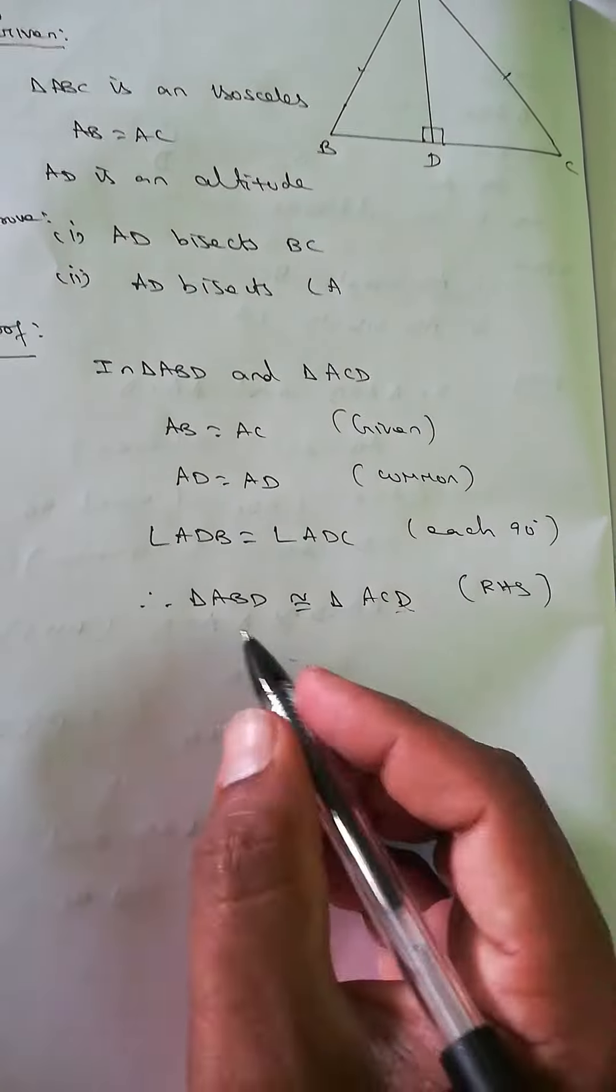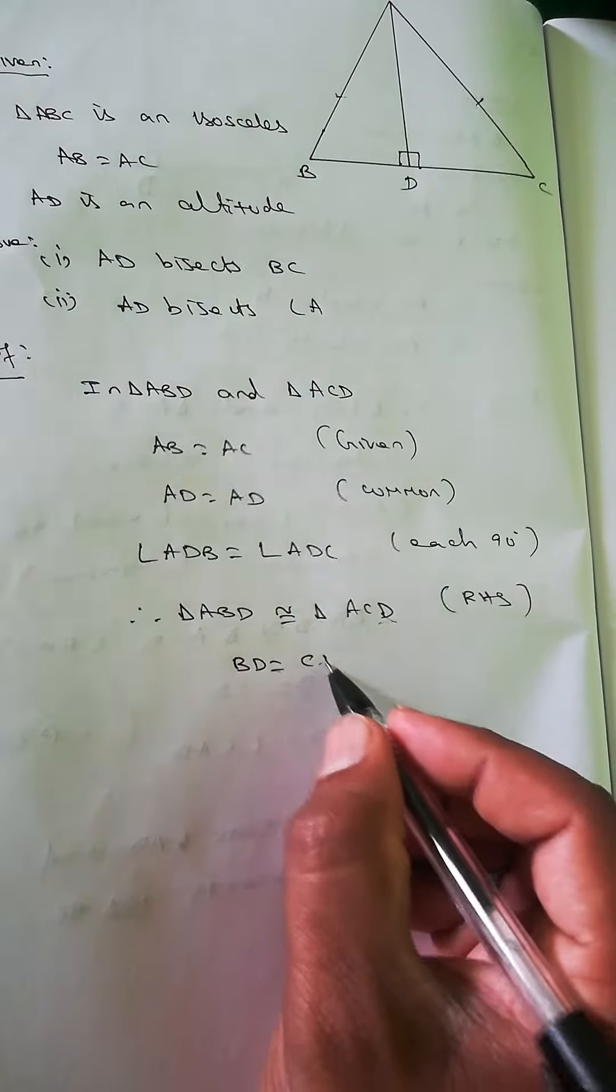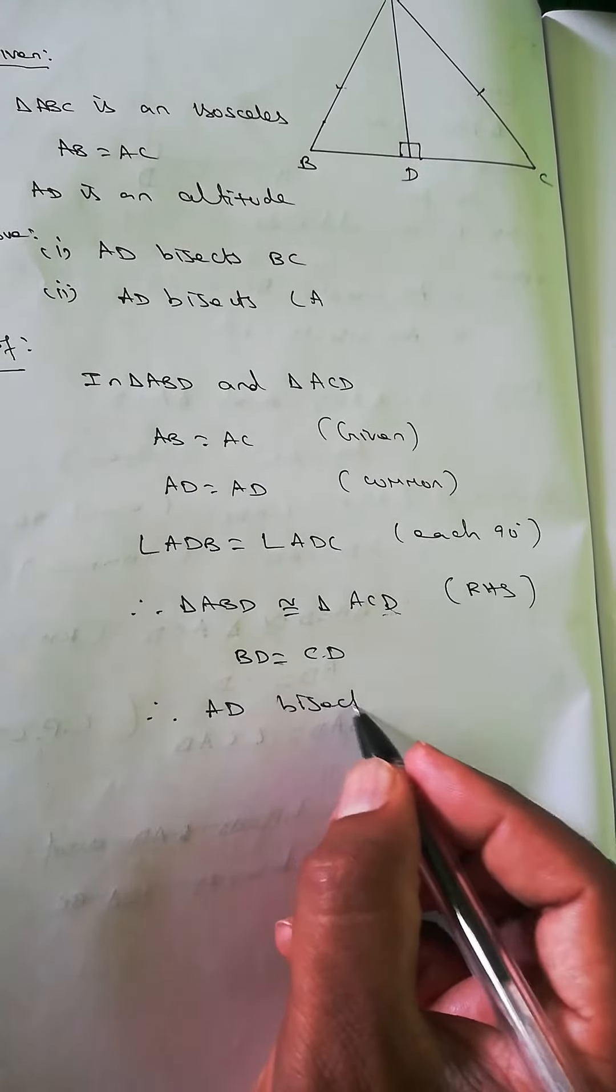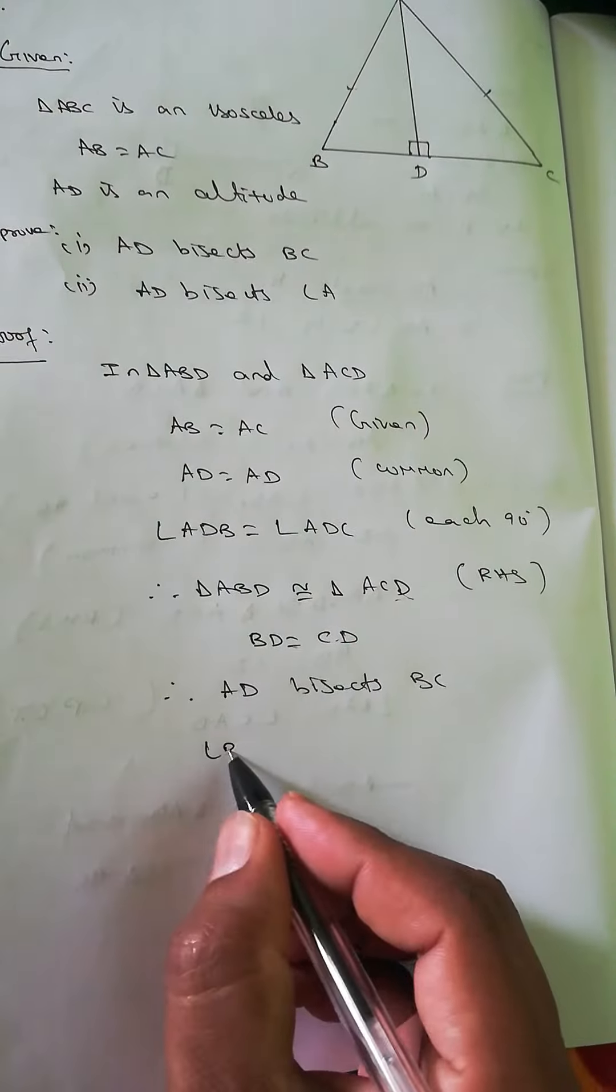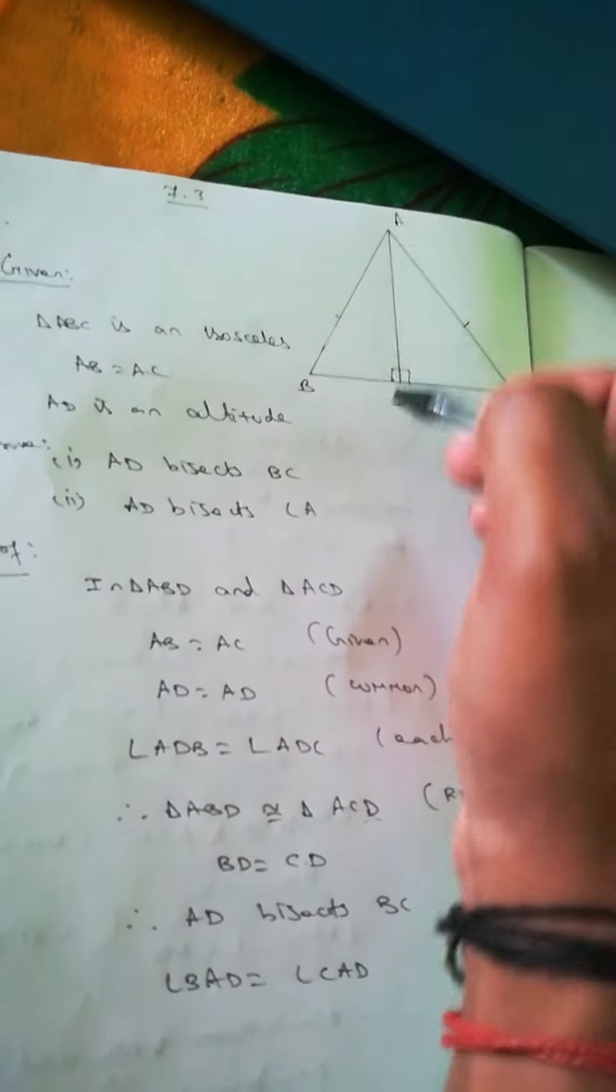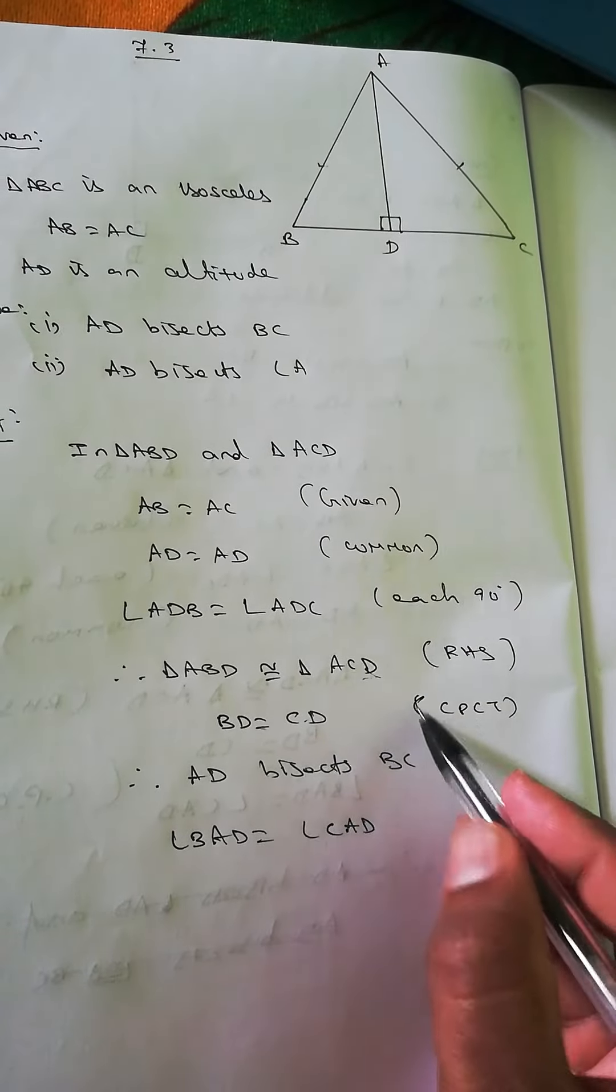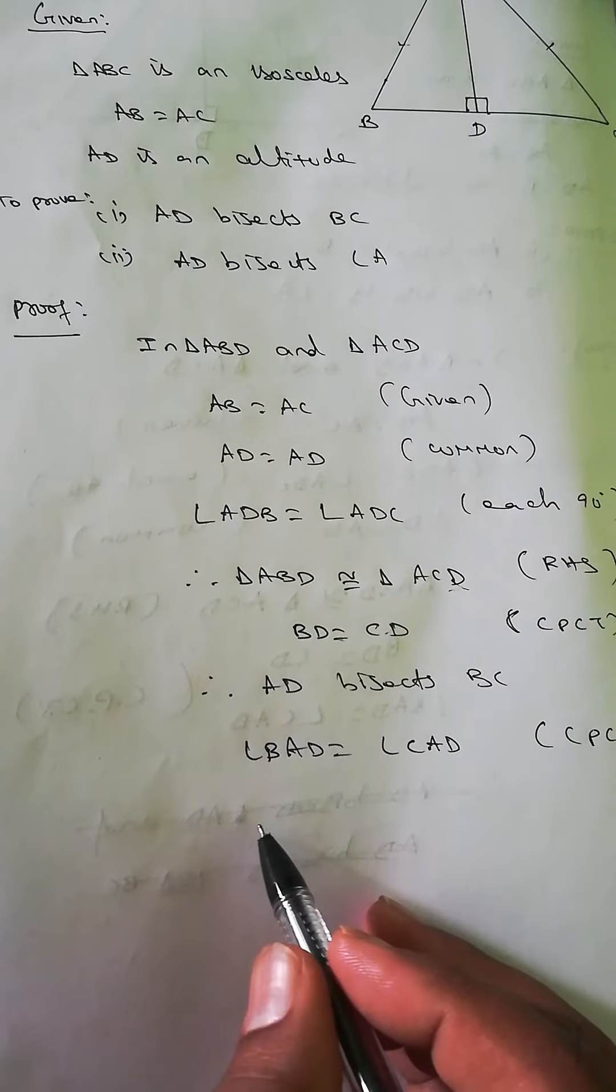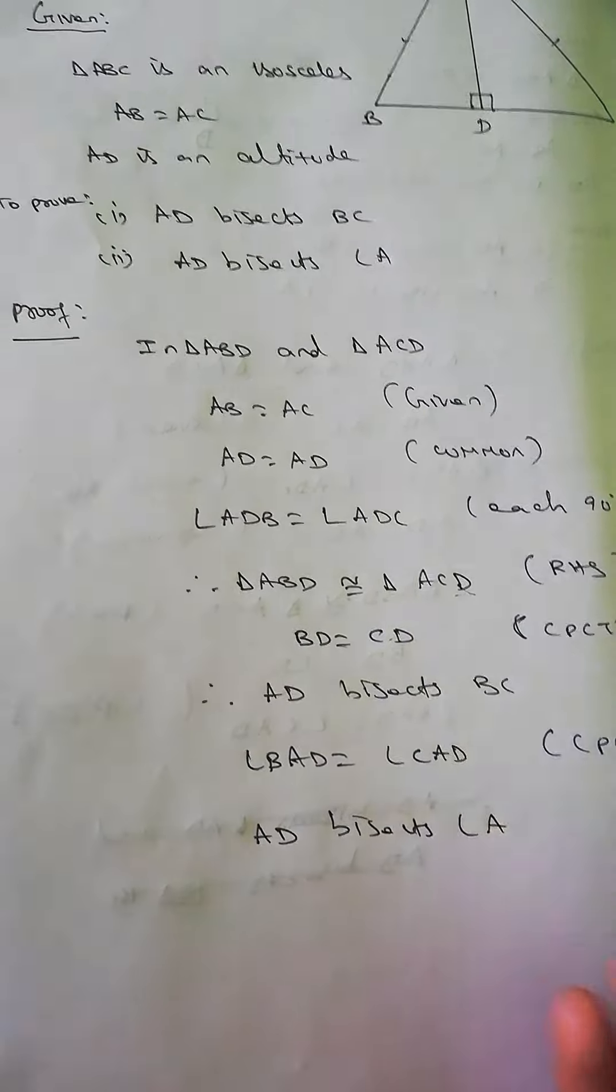By RHS rule, if triangles are congruent, we know BD equals CD. Therefore, AD bisects BC. And the second one: angle BAD equals angle CAD. This is by CPCT, corresponding parts of congruent triangles. So we know AD bisects angle A. That's the proof.